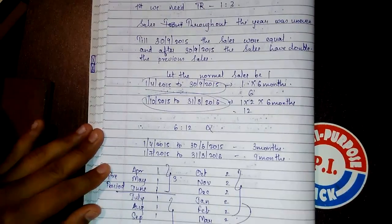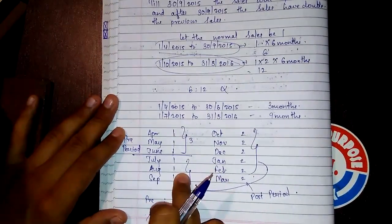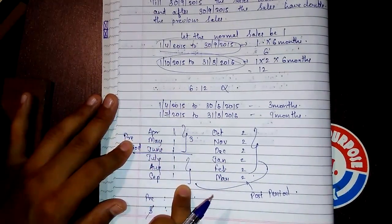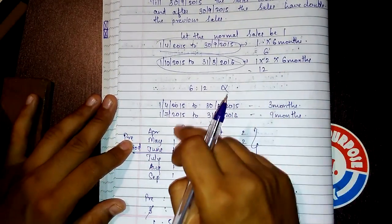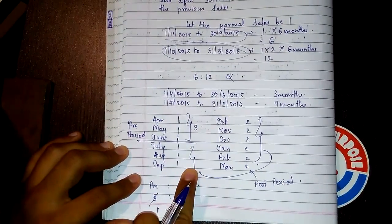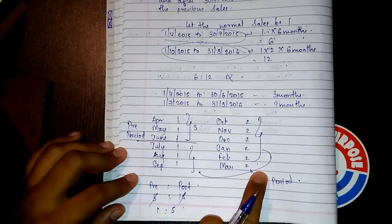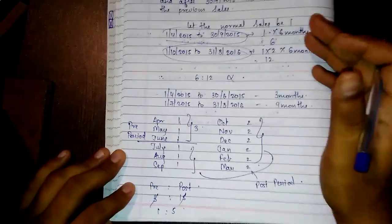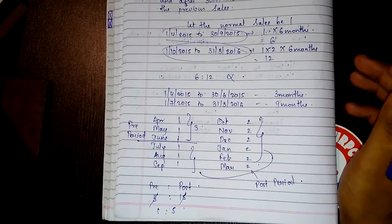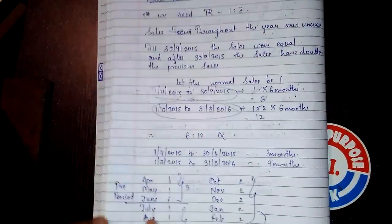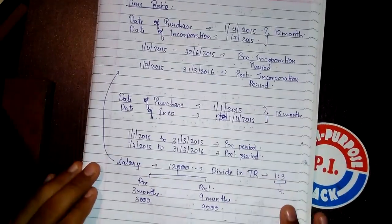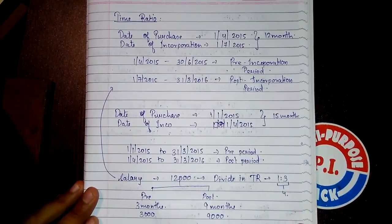I hope this is quite clear. For calculating the sales ratio, you first need the time ratio and then the sales figures — how the sale has fluctuated throughout the year — and substitute within the time ratio periods. The first 3 months were the pre-period at 1 rupee, and the remaining 9 months post-period saw sales change from 1 rupee to 2 rupees after October.